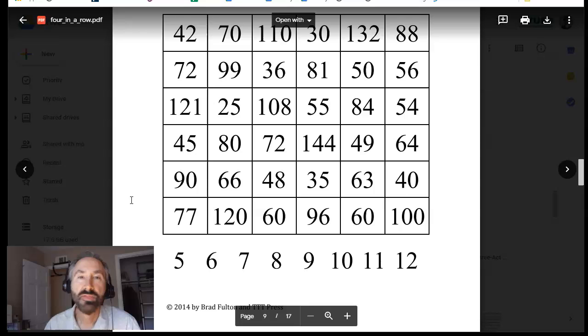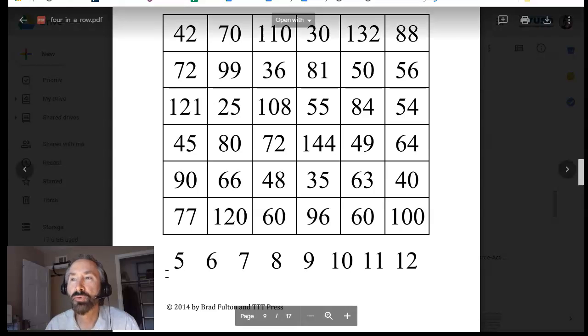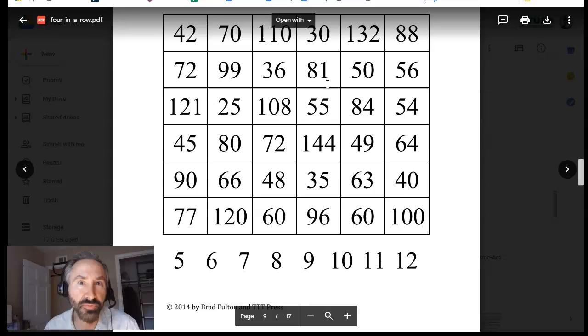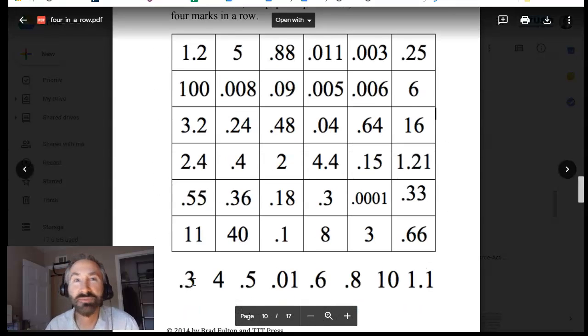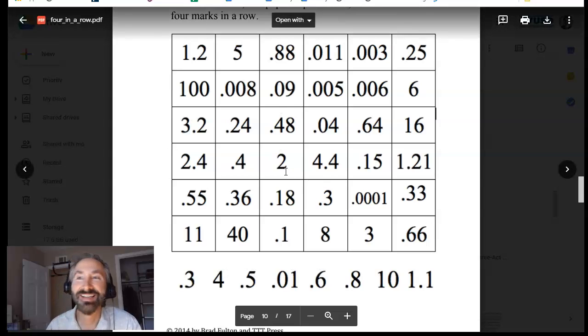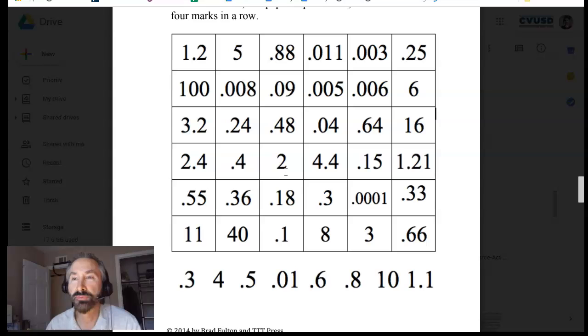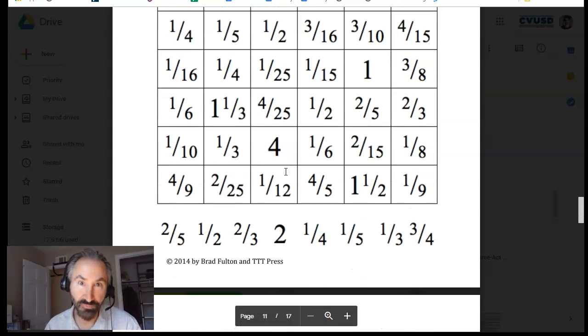This Brad Fulton is just a genius. What he figured out was this factoring game or this four-in-a-row game could be done in a variety of different ways. So your factors could just be numbers and have kids practice their multiplication tables. Or your factors could be decimals.